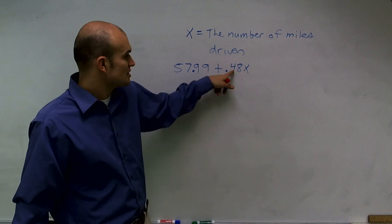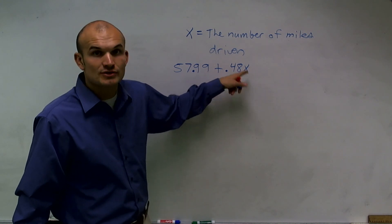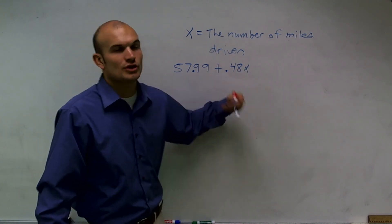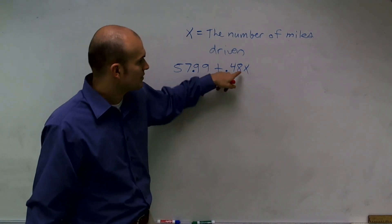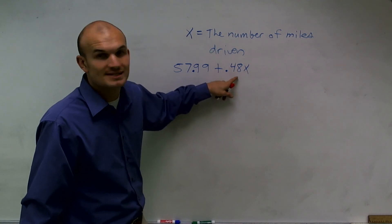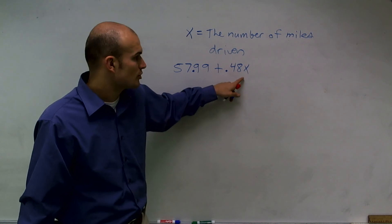So if you went one mile, it costs you $0.48. Two miles, it costs you $0.96. And you can see, I'm using multiplication as the quick way of addition. Whatever, how many miles I drive, I multiply that by $0.48. And that's how much it costs per mile.